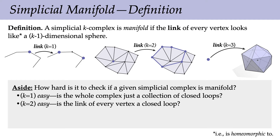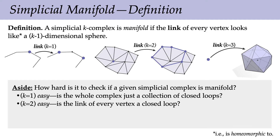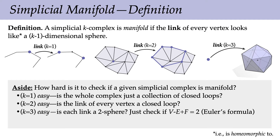For a simplicial two-complex, someone hands us a triangle mesh and asks: is it a manifold? That's pretty easy — we go to every vertex, find its link (the loop of vertices around it), and check if it's a loop. For a simplicial three-complex made of tetrahedra, the link of every vertex is a bunch of triangles, and we check if those triangles describe a simplicial sphere using Euler's formula: the number of vertices minus edges plus faces equals two.